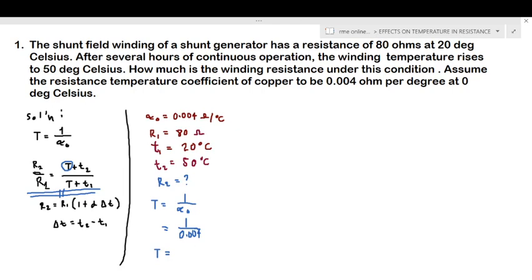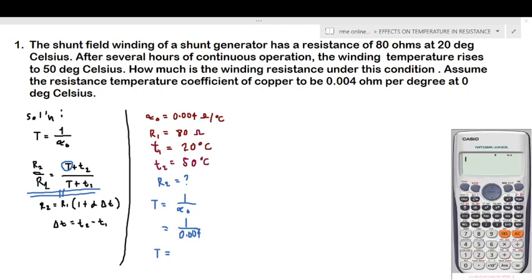So we just substitute: this is equal to 0.004. And our T now is equal to—let's use our very handy calculator—1 over 0.004, that is equivalent to 250 degrees Celsius. So this is the absolute temperature of the copper.